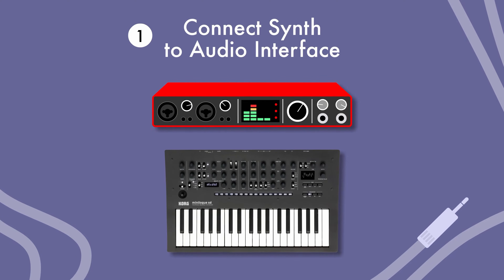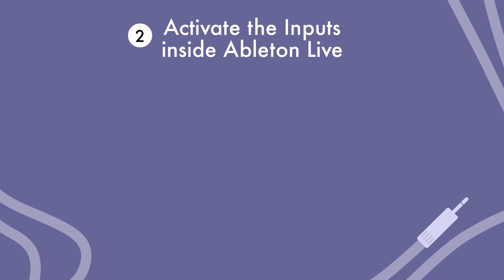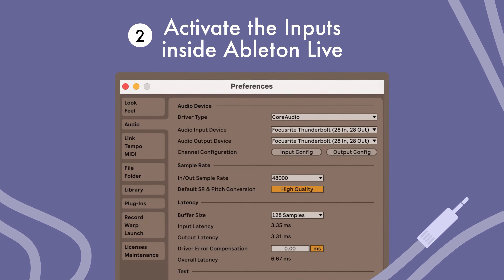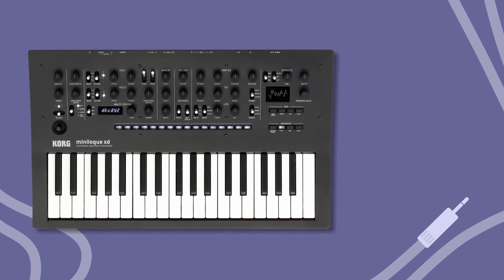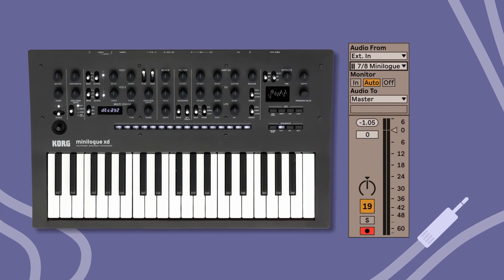So let's deal with the easy part first — connecting the synthesizer to the computer. Step one: connect the audio out of your synthesizer to an input, or two inputs if your synthesizer is stereo, on your audio interface. Step two: activate that input or inputs in Ableton. Go to Preferences, Audio, Input Config, and select the inputs. You can also name them here. Now if you only want to play on your synthesizer keyboard and record audio in Ableton, create an audio track, select these inputs on the Audio From menu, and you're done.